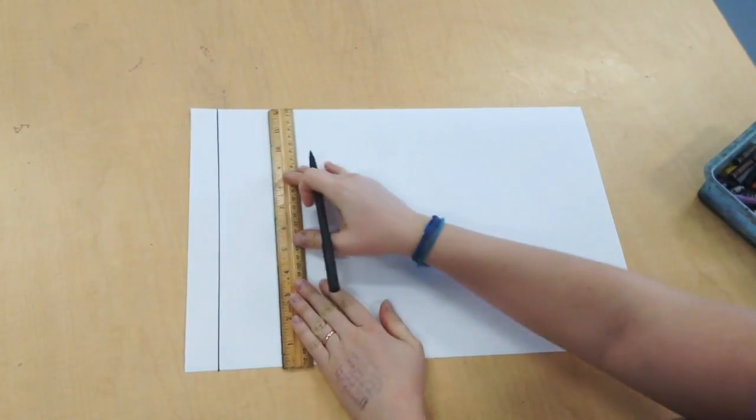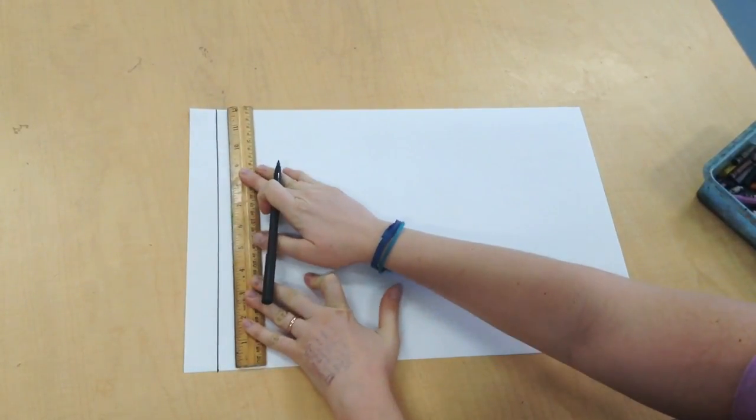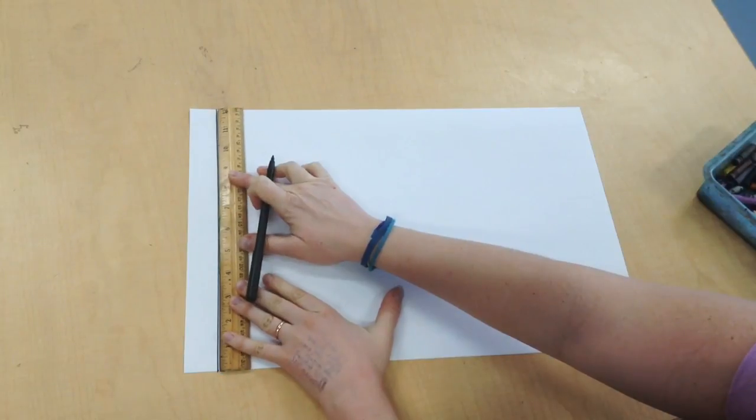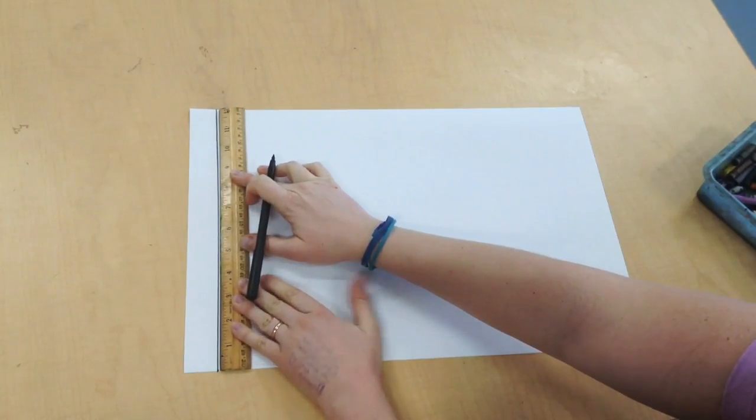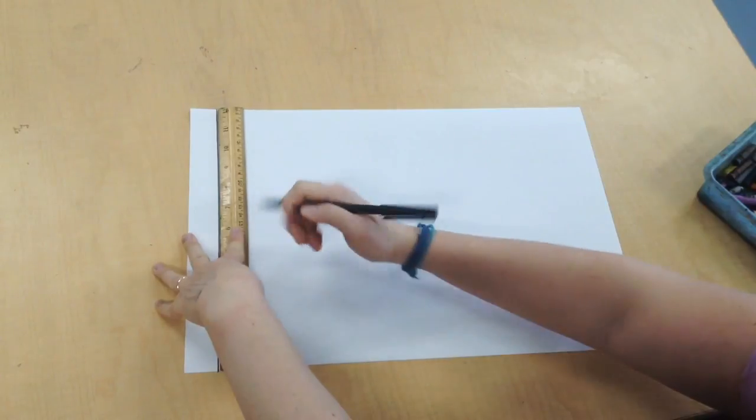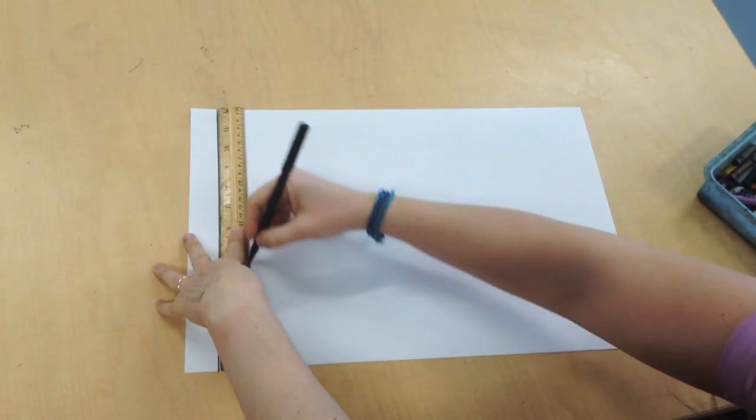Then I'm going to move my ruler over, line it up with that first line I drew, check and make sure it's nice and straight, then draw another line.